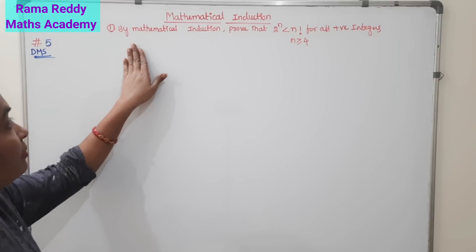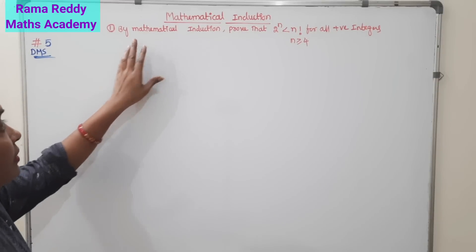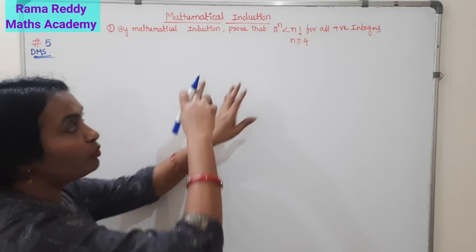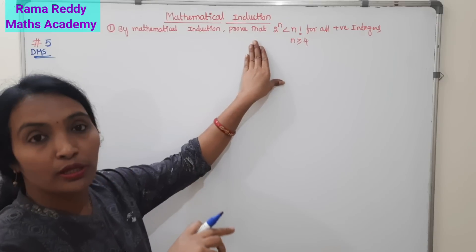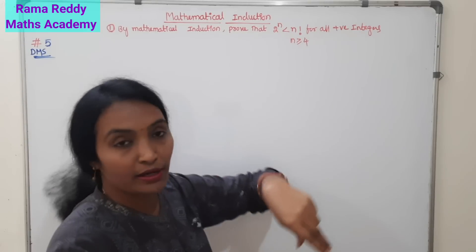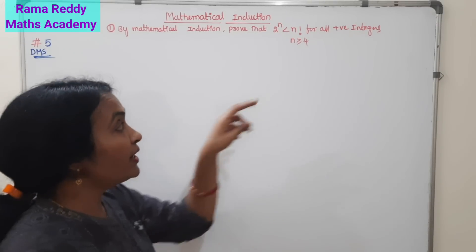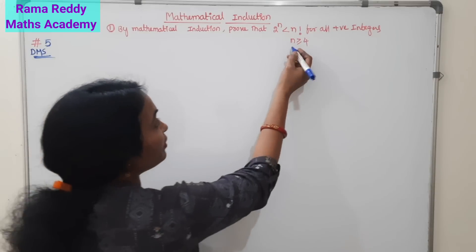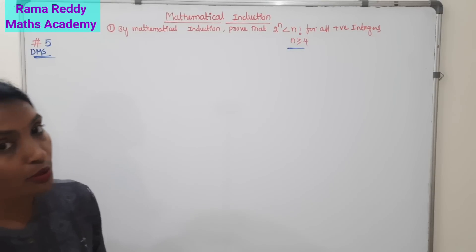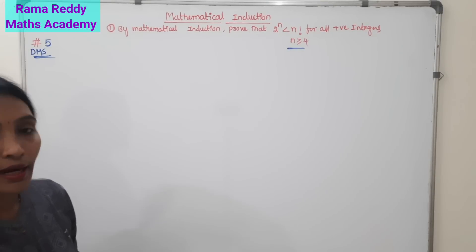What is the given problem here? By mathematical induction, we have to show that 2 power n is less than n factorial, where n is a positive integer. It starts with n greater than or equal to 4.